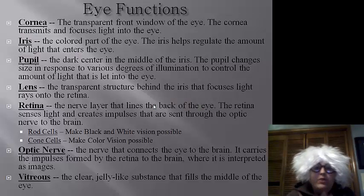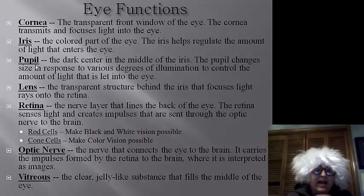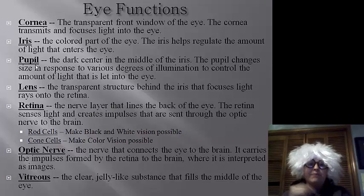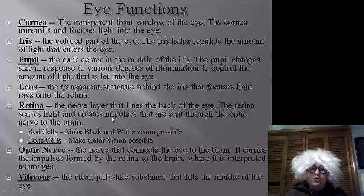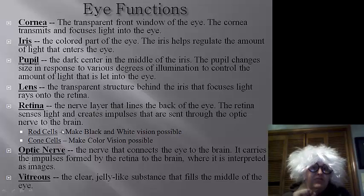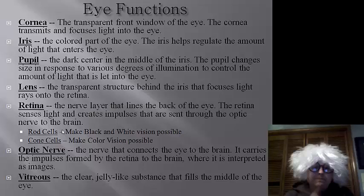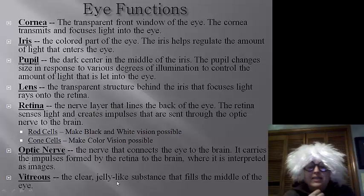The cornea is the transparent window that focuses light into the eye. The iris is the colorful part that regulates the amount of light that enters. The pupil is the dark center that changes size in response to illumination, controlling the amount of light the eye lets in. The lens is the transparent structure behind the iris that focuses light into rays that can be read by the retina. The retina is the nerve layer that lines the back of the eye, senses light, and creates impulses sent to the optic nerve going to the brain. There are two types of cells: rod cells for black and white vision, and cone cells for color vision. The optic nerve connects the eye to the brain, and the vitreous fluid is the clear jelly-like substance that fills the middle of the eye.